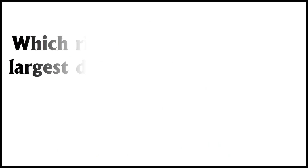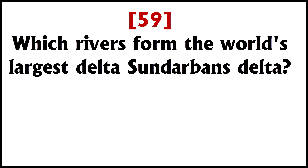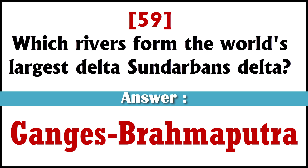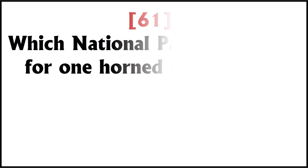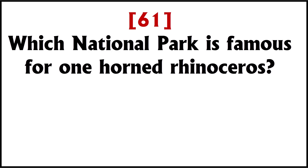Which rivers formed the world's largest delta, the Sundarbans delta? The Ganga and Brahmaputra. Which ruler built the Grand Trunk Road? Sher Shah Suri. Which national park is famous for the one-horned rhinoceros? Kaziranga, Assam.